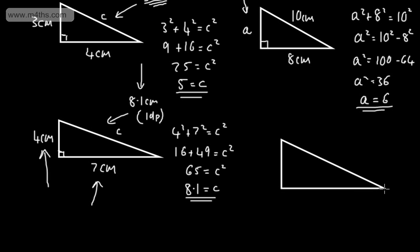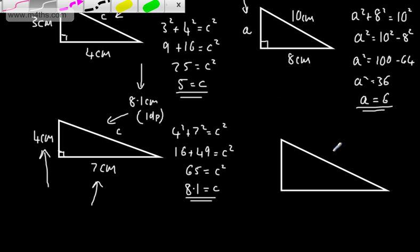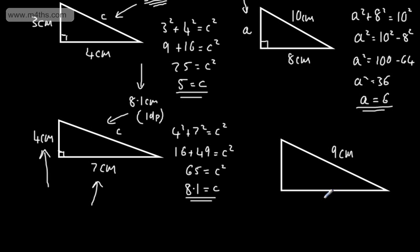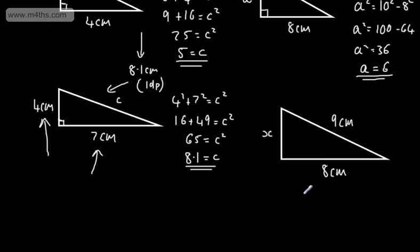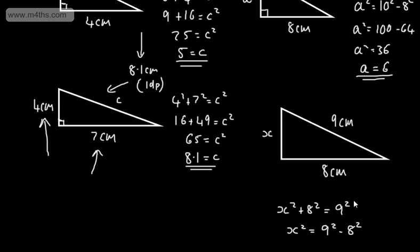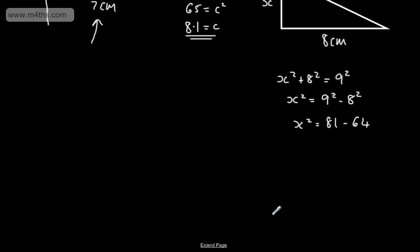This time we're going to find one of the shorter sides. Let's say the hypotenuse is 9 centimetres and one shorter side is 8 centimetres, and we want to find the remaining length, which I'll call x. We can say x squared plus 8 squared equals 9 squared, or equivalently x squared equals 9 squared minus 8 squared. So x squared equals 81 minus 64, which gives x squared equals 17. All we need to do is take the square root of 17.